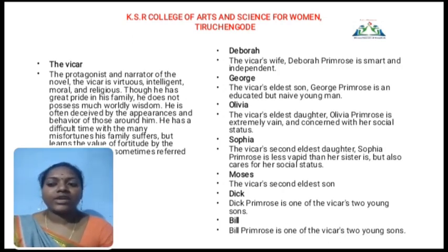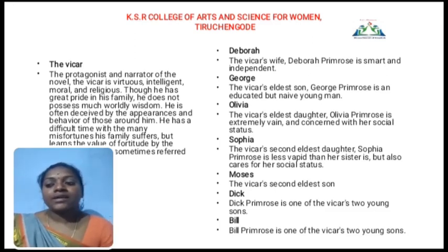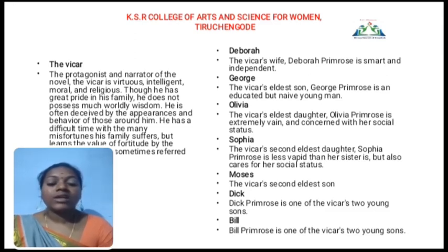The next character is William Thornhill. He is a man of broken fortune. William Thornhill is disguised — his real name is William Thornhill, but after that he disguises himself as the Mr. Burchell character.